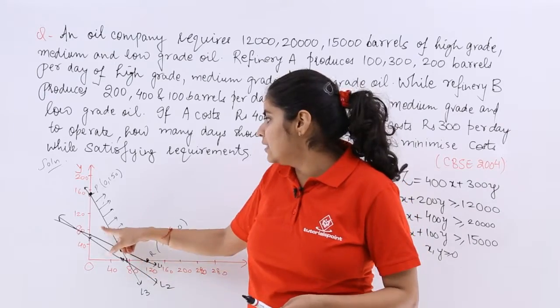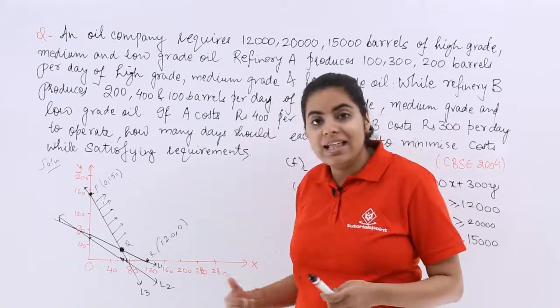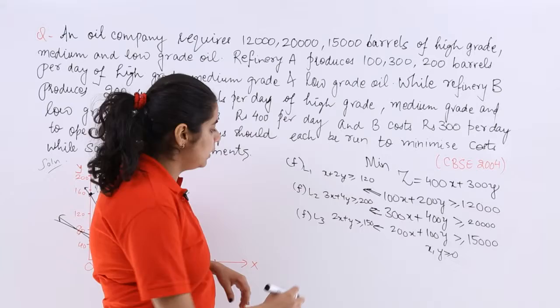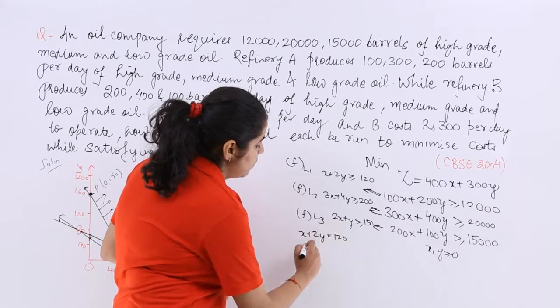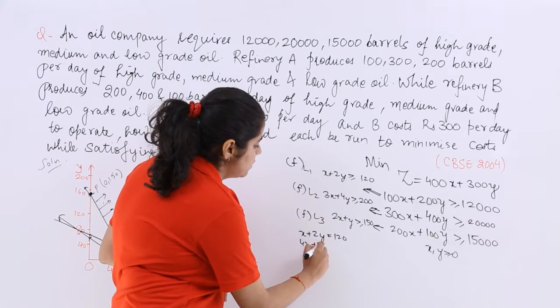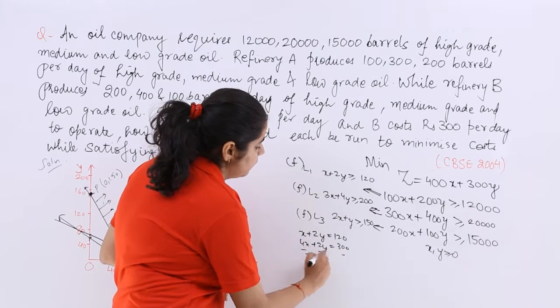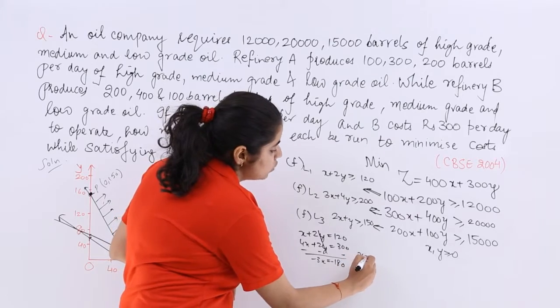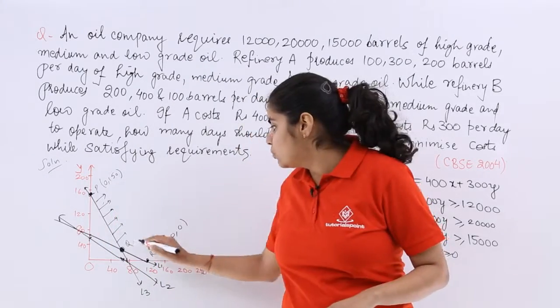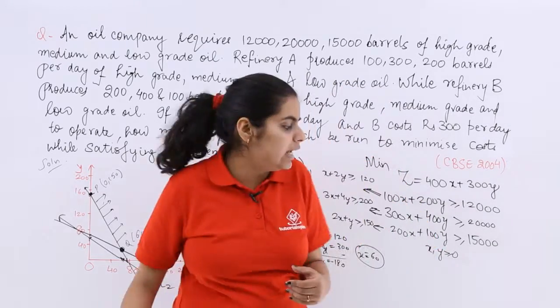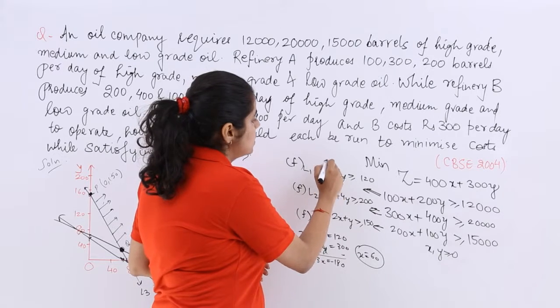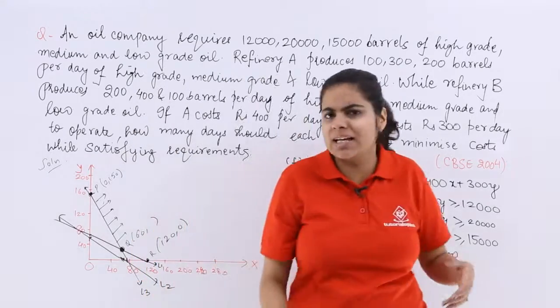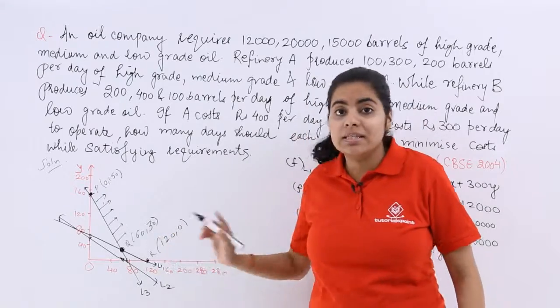So we have to form the intersection of L1 and L3. So what would it be like? x plus 2y is equal to 120. And what is L3? Let's multiply by 2. 4x plus 2y is equal to 300. So minus 3x. And here it should be like minus 180. So x is equal to 60. Is there? So x should be your 60. And what is your y? So put 60 in any of the equations. So it is y is equal to 30. Because when you put it, it will go to the other side, solve itself. So 30 is your y.